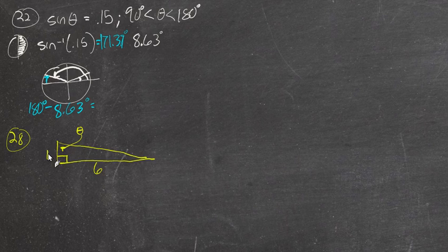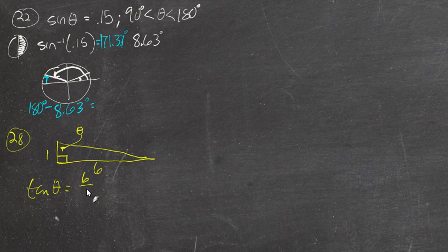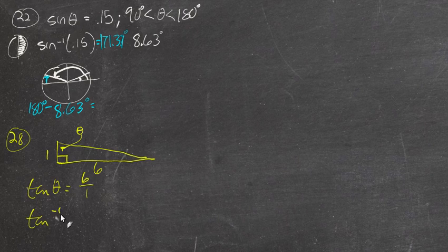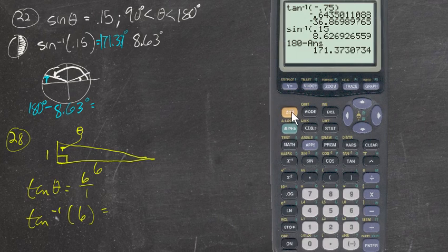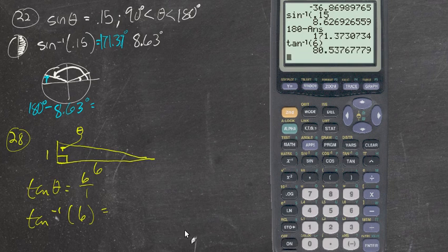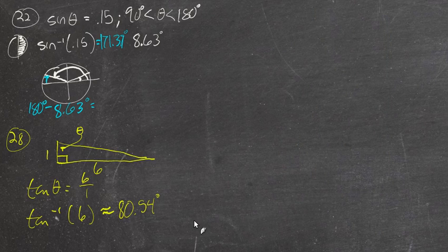But what we know is that the opposite side is 6 and the adjacent side is 1. We don't know the hypotenuse. We don't need to know the hypotenuse. We know the opposite side is 6 and the adjacent side is 1. So what's that? That's the tangent. The tangent of this angle is 6 over 1. Opposite over adjacent. So if we were to put in the calculator, inverse tangent of 6, that should give us that angle. So inverse tangent of 6. 80.54 degrees. Approximately.